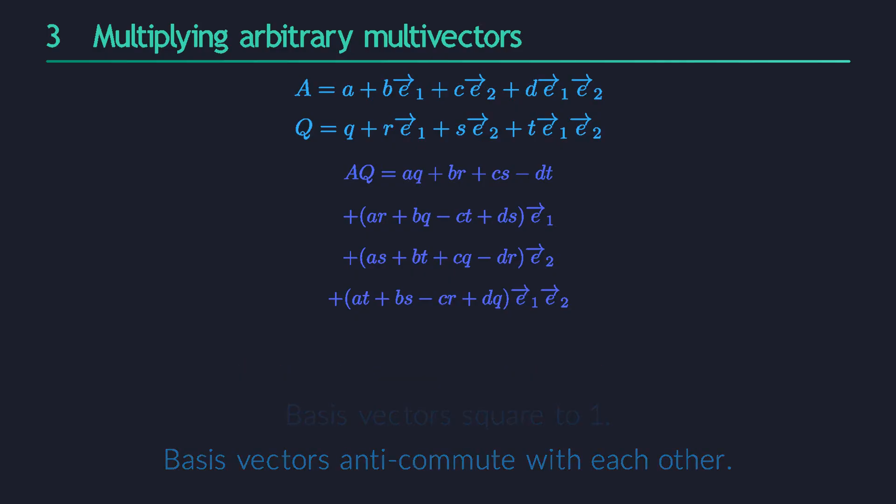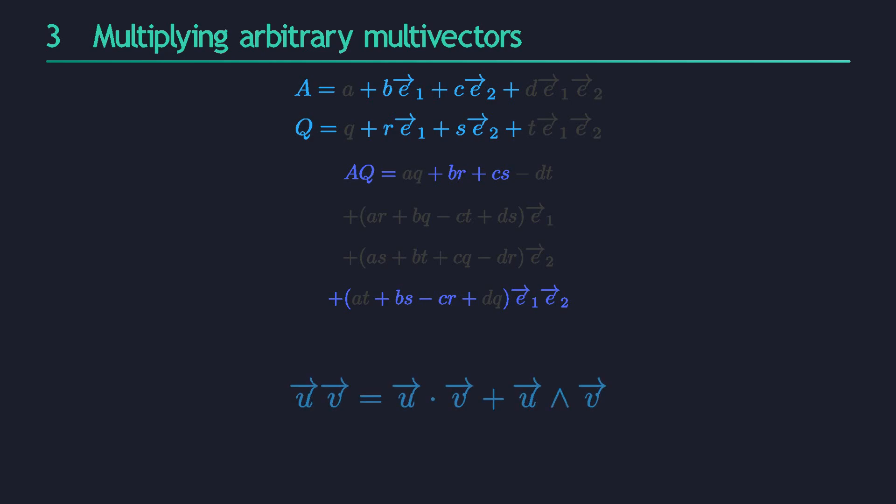From this general purpose formula, we can now derive some more specific cases. For instance, if our two inputs are both pure vectors, their real and bi-vector parts are 0. That makes many of the 16 terms disappear. The end result is the same formula we derived in the previous video. You can now recognize this bit as the dot product, and this bit as the wedge product.